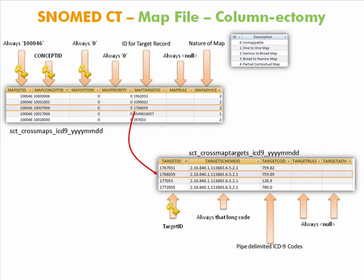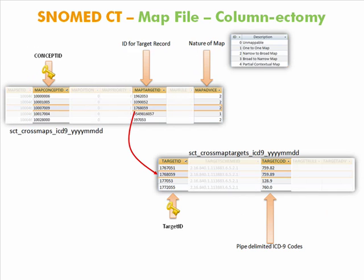What I like to do is take out stuff that really isn't helping or isn't doing anything, so we're going to do a columnectomy on these particular files, and it looks like this. When you're done, the only columns that really have any meaning are: the concept ID, which can work as a primary key in this instance because of the way these files are created; the map target, which links you to the other table; the map advice, which allows you to see the most important things — unmappable and partial contextual map — which have limited value depending on what you're planning to do with your SNOMED ICD-9 map. And then in the target file, the primary key target ID and the ICD-9 code column, which is pipe-delimited. After the columnectomy, that's what it looks like.